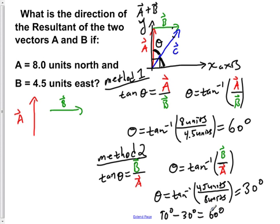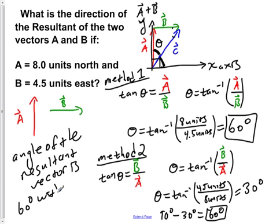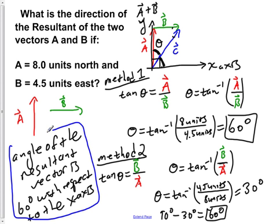So from this we have concluded from two different methods that the angle of the resultant vector is 60 degrees with respect to the x-axis. So that's our answer. We make an angle of 60 degrees with respect to the x-axis.